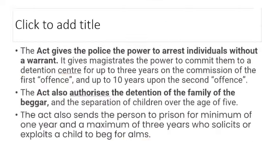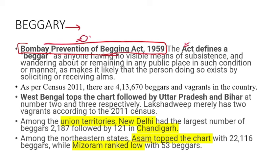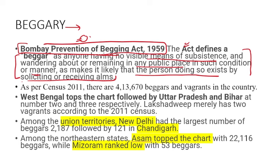Moving to Beggary — do not confuse it with BEGAR from Article 23, which is forced labor. There is no national law on beggary; most states follow the Bombay Prevention of Begging Act 1959, which defines beggary as having no visible means of subsistence and wandering in public places in a manner suggesting one exists by soliciting or receiving alms. As per Census 2011, there are 413,670 beggars and vagrants in India.